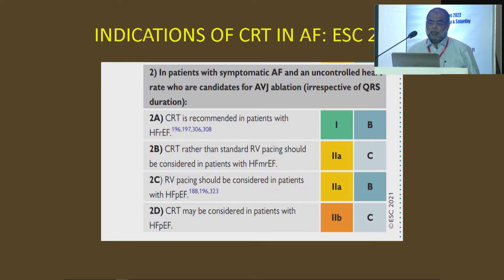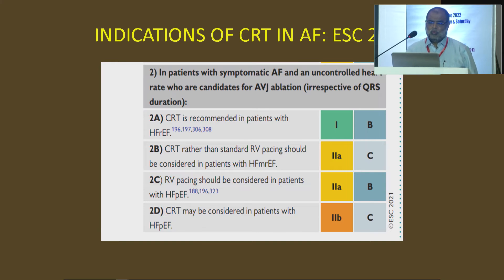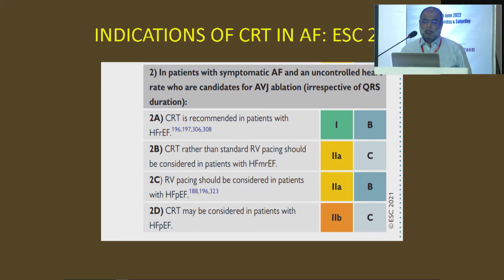In patients with symptomatic AF and uncontrolled heart rate who are candidates for AV junction ablation, irrespective of QRS duration — these are new in the guideline. For patients with atrial fibrillation and heart failure whose heart rate cannot be controlled by drugs, who are candidates for AV nodal ablation and have ejection fraction less than 40%, CRT is a Class 1 indication. CRT rather than RV pacing should be considered in heart failure with mildly reduced ejection fraction. CRT may be considered in heart failure with preserved ejection fraction. These are new in the ESC guideline.